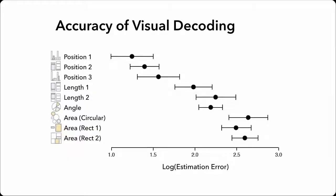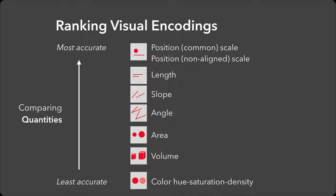We compare the accuracy of different encodings — for example, error rates when comparing things such as position, length, angle, and area. By combining the results of these experiments, we can actually build rankings of visual effectiveness for different encodings for different types of perceptual tasks. When comparing quantities, position and length outperform things like angle and area, which roundly outperform color encodings. This is useful to help guide — though not dictate — what human designers do, and also very helpful for guiding algorithms that might automatically recommend effective and useful graphics.